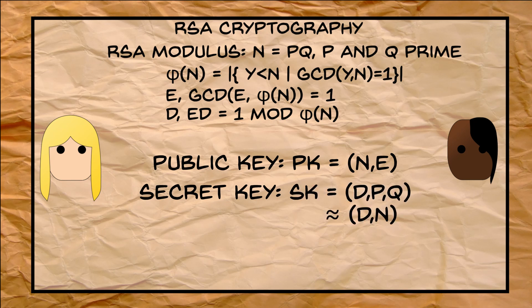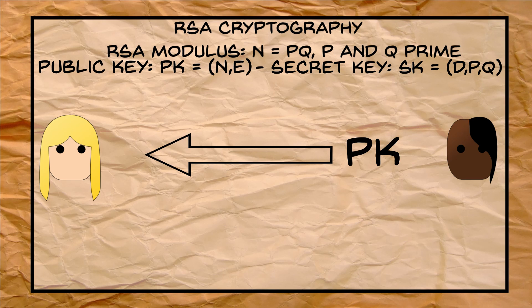Or almost equivalently, d, n. Bob then publishes the public key, so Alice can find and use it, and keeps the secret key to himself.